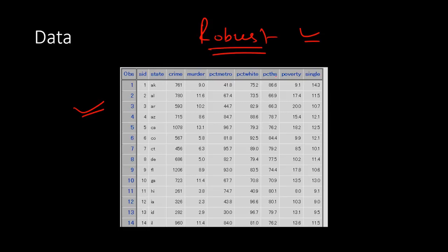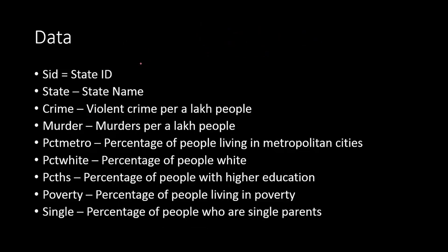This is the data on crime records on different states, in each state. And we have got several variables. We are not going to use all of them. Here is the explanation for all the data, all the variables we have in our data.